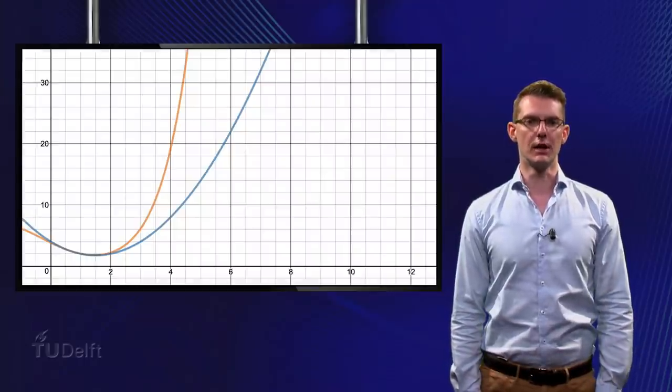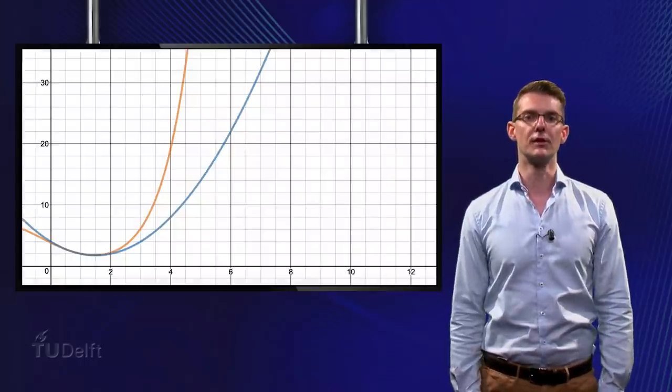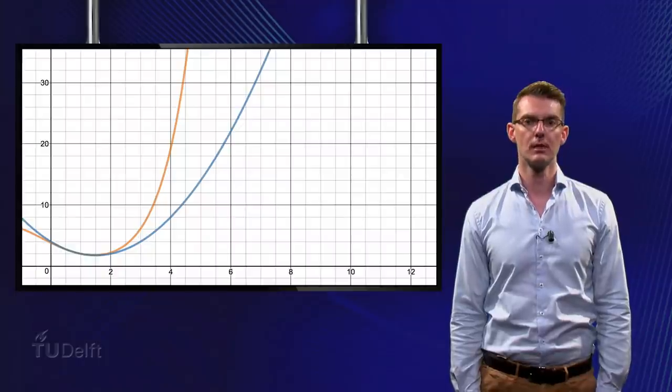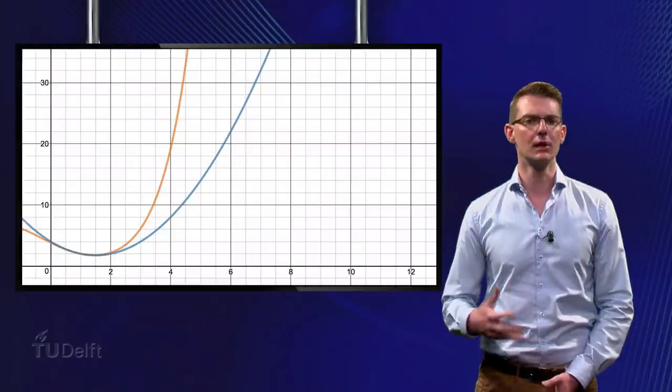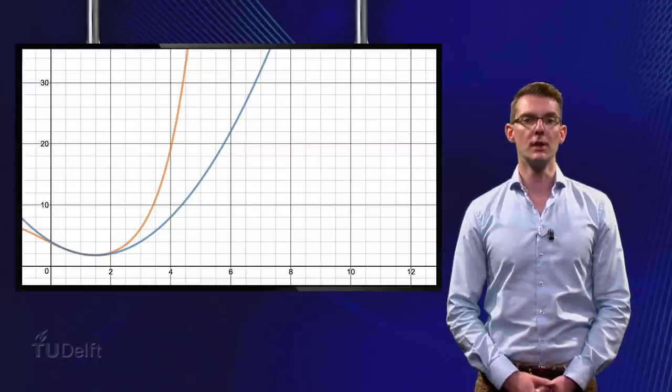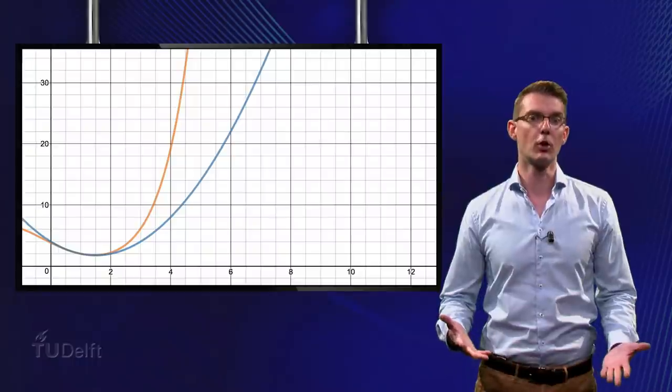The blue line that you see here is the graph of the Taylor polynomial we just constructed. It is already a better approximation of the orange graph than the Taylor polynomial of degree 1. The higher the degree of the Taylor polynomial, the better the approximation.